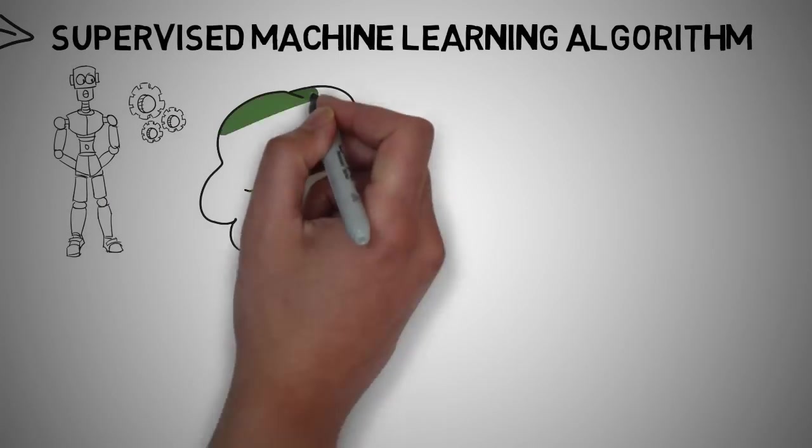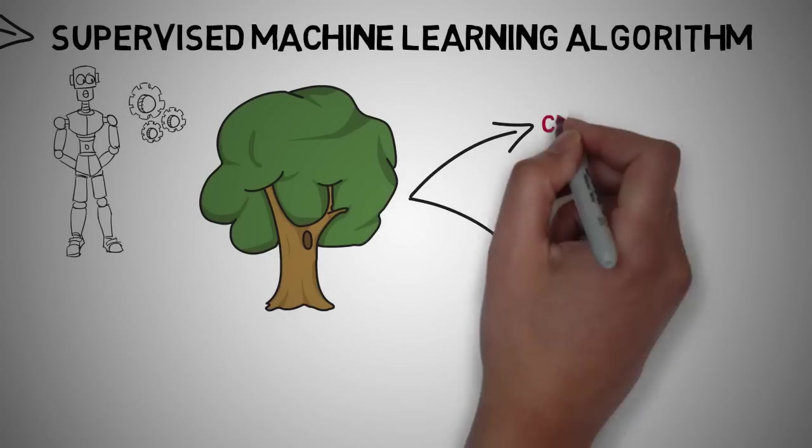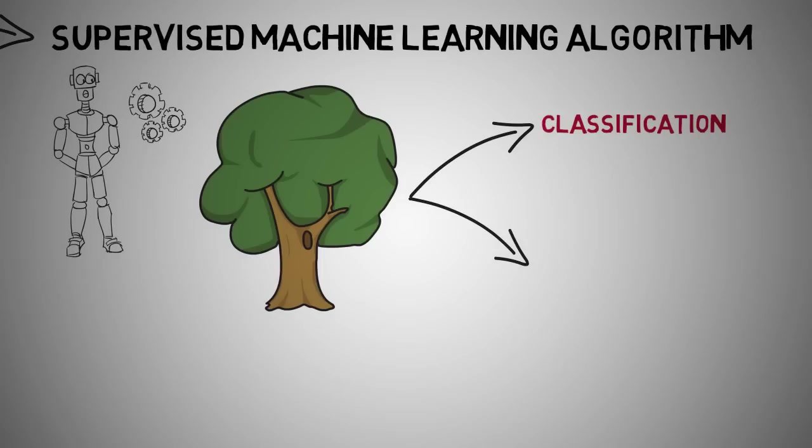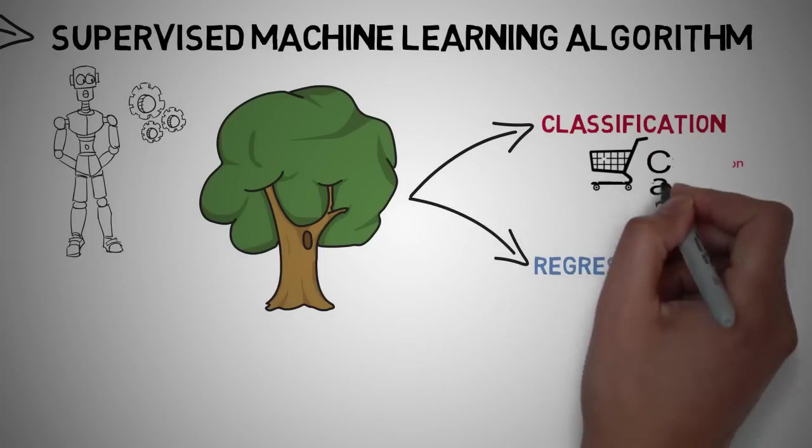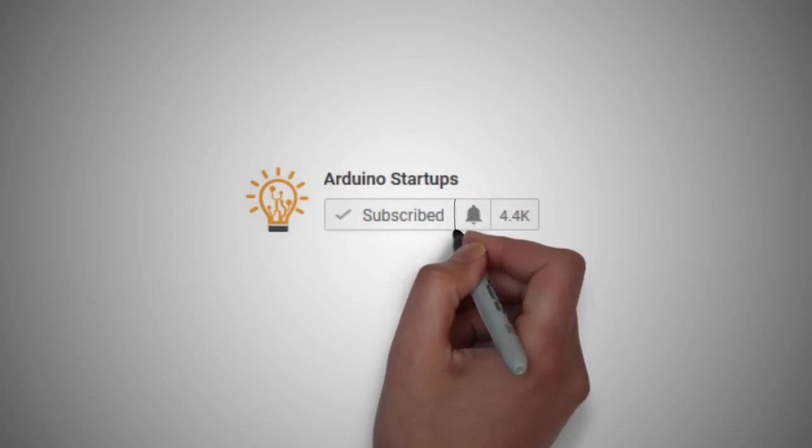A tree has many analogies in life and turns out it influences a wide area of machine learning, covering both classification and regression trees, otherwise known as CART. Please join our notification brigade by subscribing and clicking that bell icon.